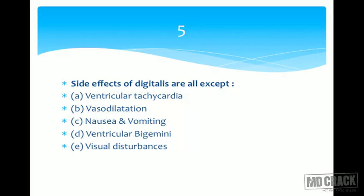Question number five: side effects of digitalis are all of the following EXCEPT — A ventricular tachycardia, B vasodilation, C nausea and vomiting, D ventricular bigeminy, and E visual disturbances. Nausea and vomiting is the first symptom of digitalis toxicity — gastrointestinal intolerance is common. Visual disturbances — digitalis affects color vision, so visual disturbances are possible.